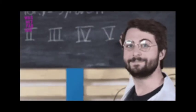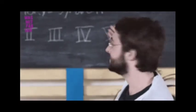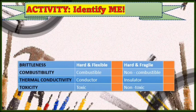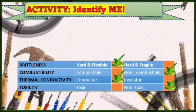Now that you are familiar with the properties of materials, both physical and chemical, let's try what you've got. You are going to identify the objects or materials in terms of brittleness, combustibility, thermal conductivity, and toxicity. All you have to do is to put a check inside the box that closely describes the materials.